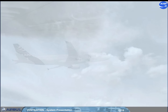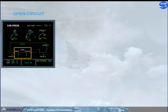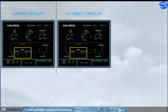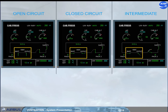To summarize. Open circuit: the equipment is cooled by blown outside air. Closed circuit: the equipment is cooled by blown air through a skin heat exchanger. Intermediate: the equipment is cooled by blown air through a skin heat exchanger, plus partially exhausted overboard.